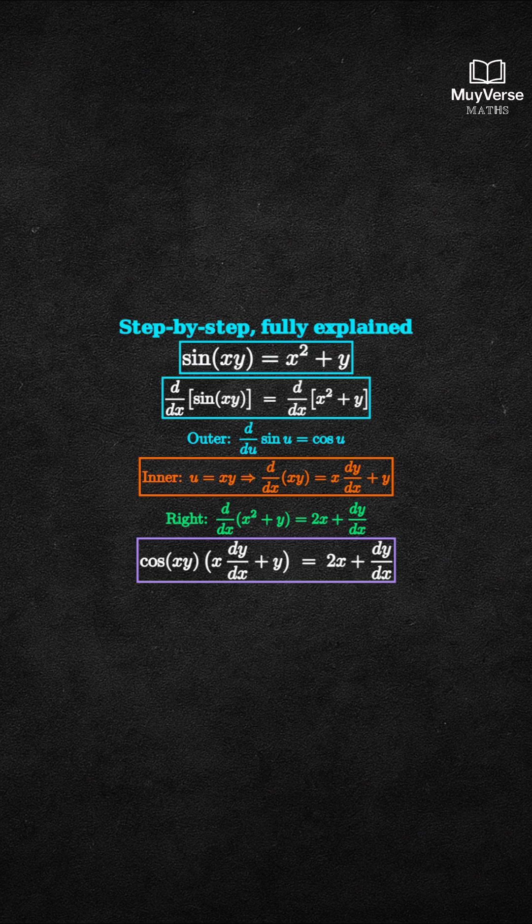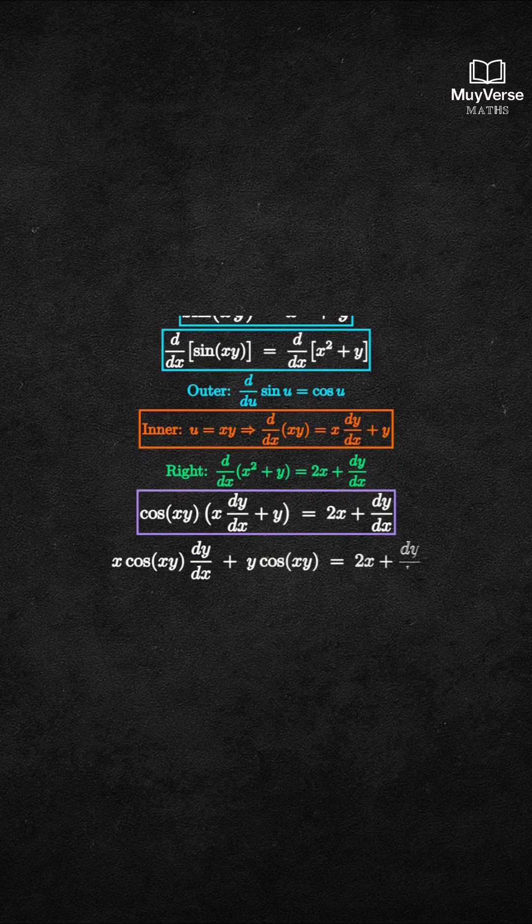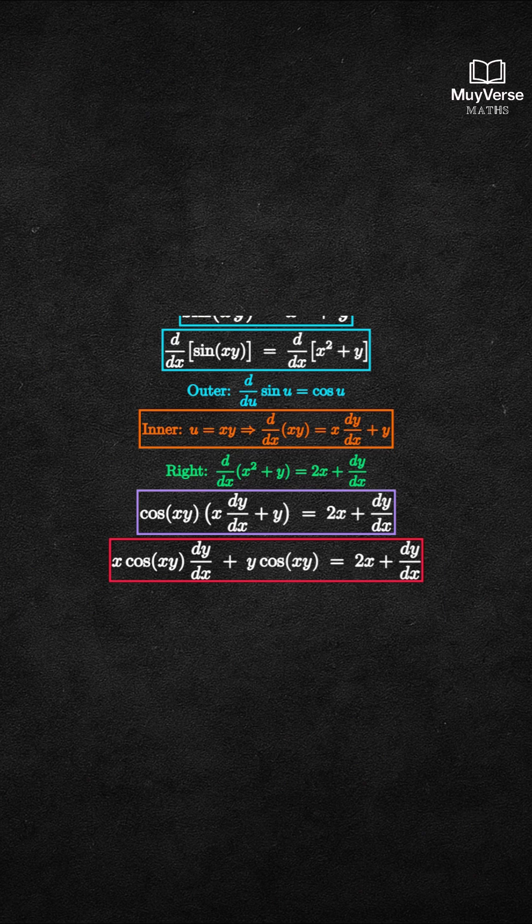Step 2: Expand and collect the dy/dx terms. We distribute the cosine term to get x cosine of xy times dy/dx plus y cosine of xy equals 2x plus dy/dx.